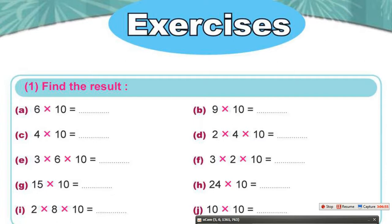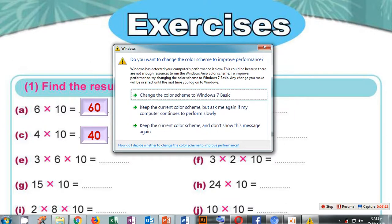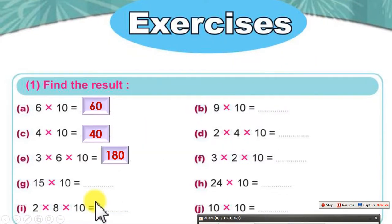The exercises: Find the result. 6 times 10 equals 60. 4 times 10 equals 40. For 3 times 6 times 10 — we have 3 numbers, so multiply the first two numbers first: 3 times 6 equals 18, then 18 times 10 equals 180. 15 times 10 equals 150 by adding 0 to the right of 15.